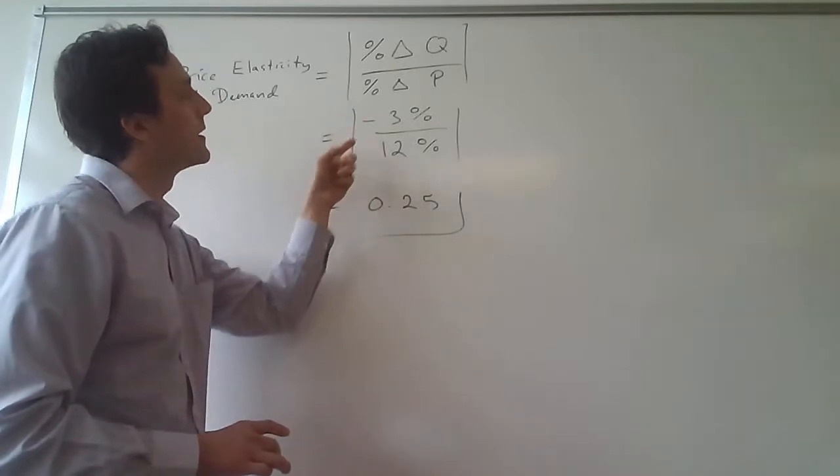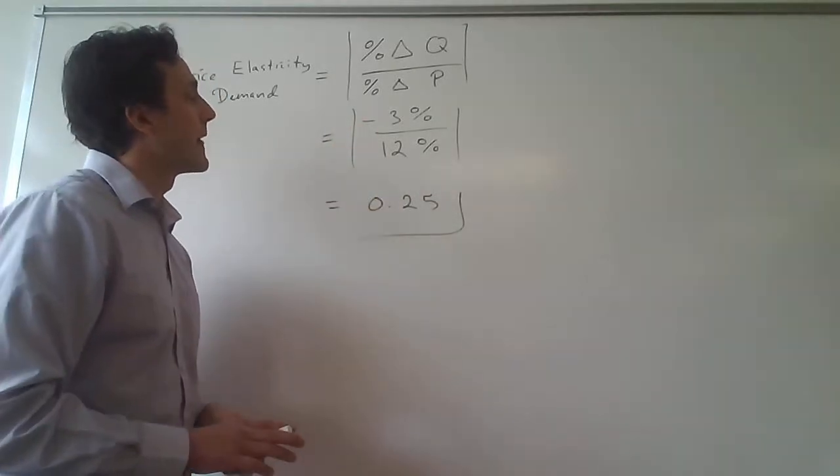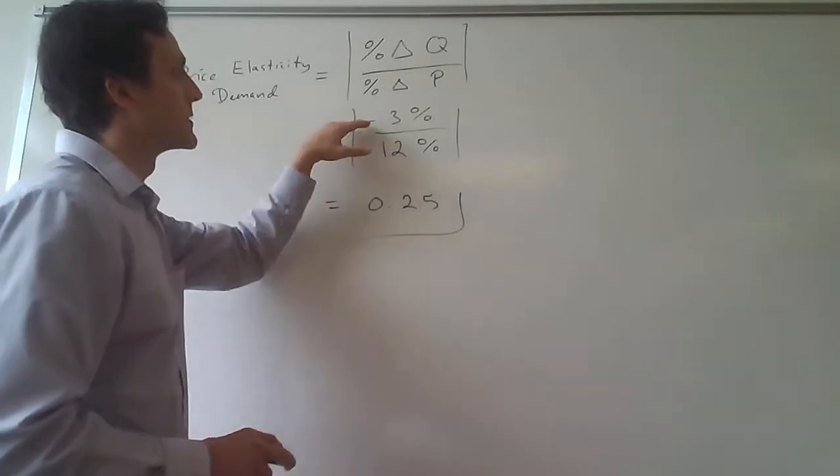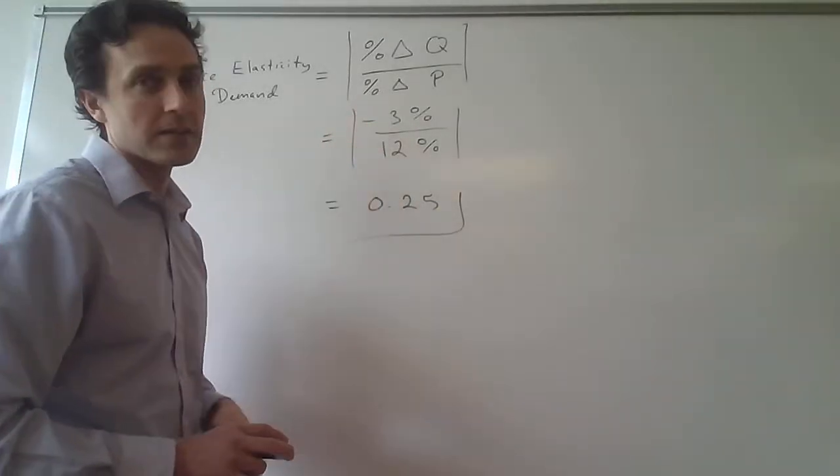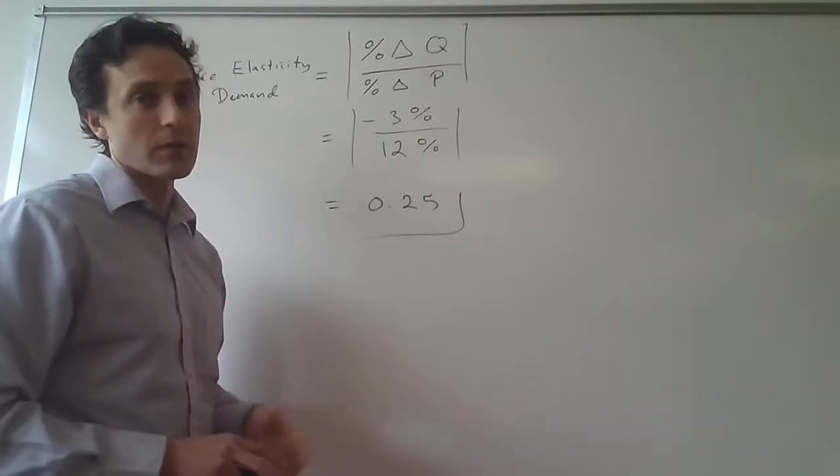so we have negative 3% over 12%, and of course, since we're taking the absolute value, that essentially means that negative sign goes away, so it's just 3 over 12. The percentages cancel as well, 3 over 12 is 1 fourth,